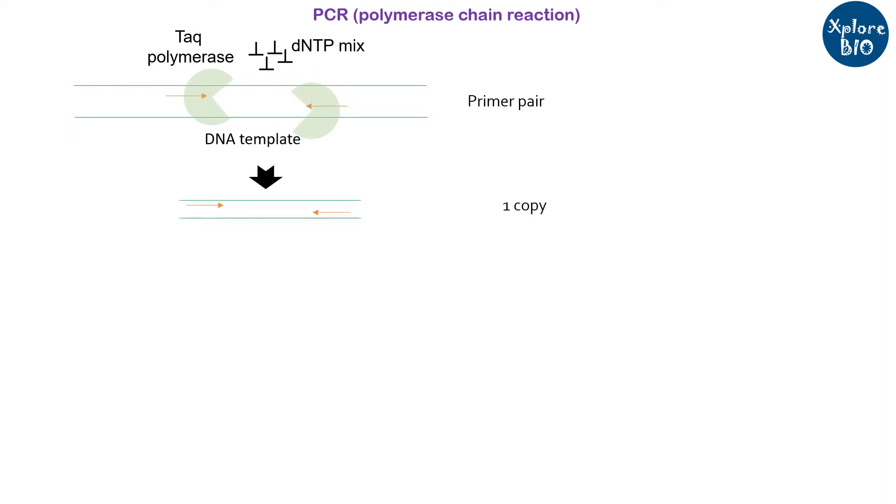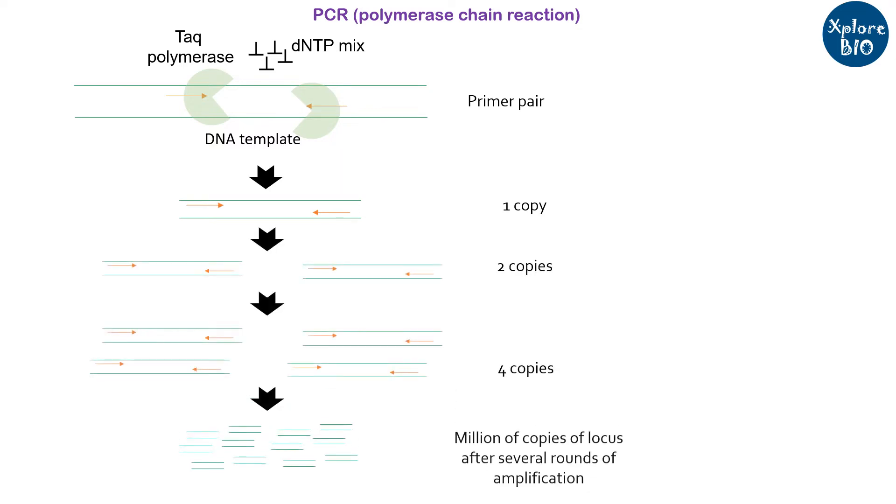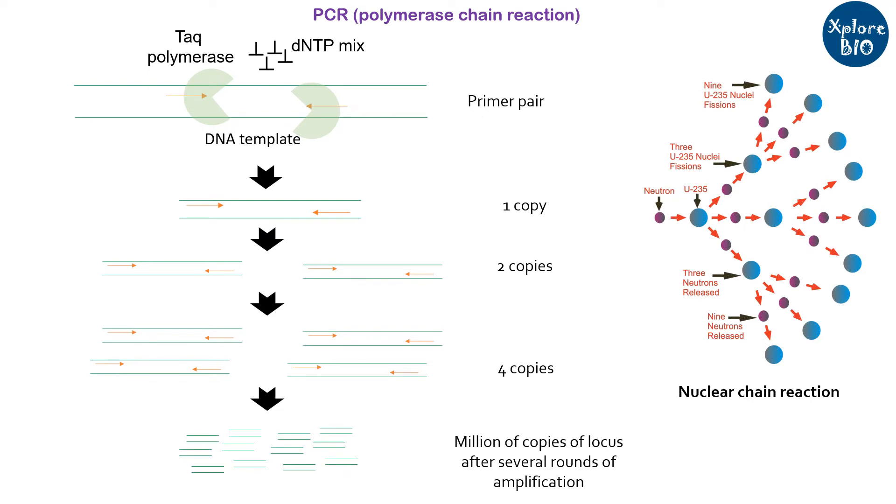The PCR reaction is termed as chain reaction because the number of products amplified doubles after each cycle, just like a nuclear reaction, at least theoretically.